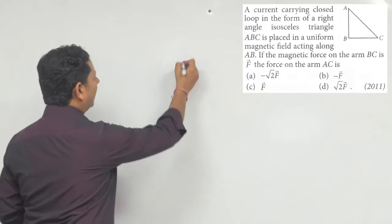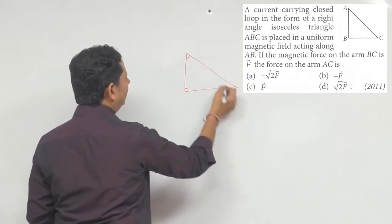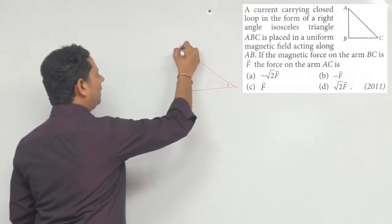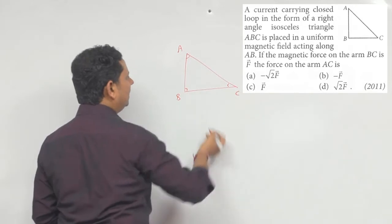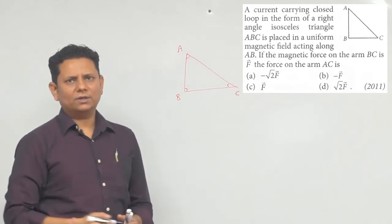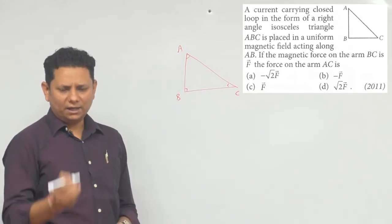Simple question on basic concepts. This triangle is a right angle triangle with vertices A, B, and C. There is a uniform magnetic field.